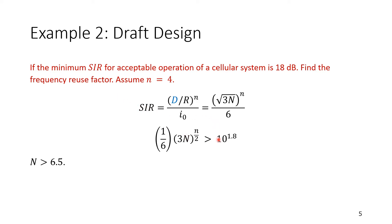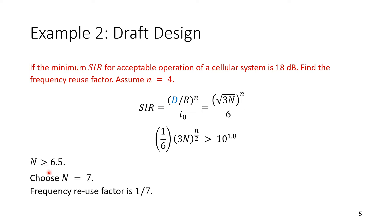Substituting and solving, SIR in linear is 10^(18/10) = 10^1.8. The path loss exponent n = 4, so the power in the SIR formula becomes n/2 = 2. Solving for capital N gives approximately 6.5. Since N must be greater than 6.5 and only discrete values are valid (1, 3, 7, etc.), we choose N = 7. The frequency reuse factor required is therefore 1/N = 1/7.